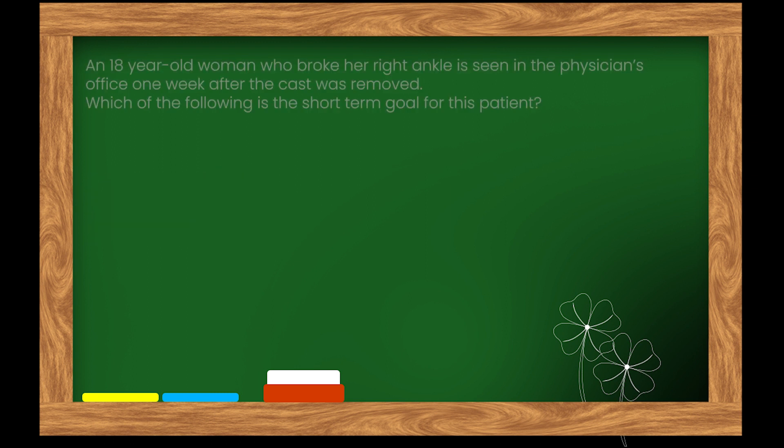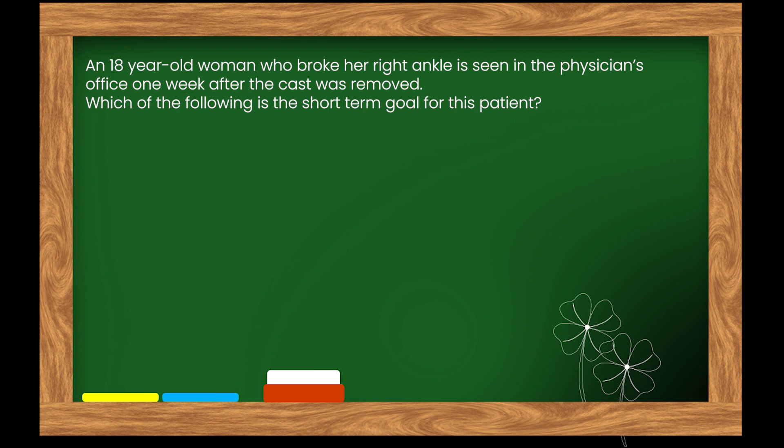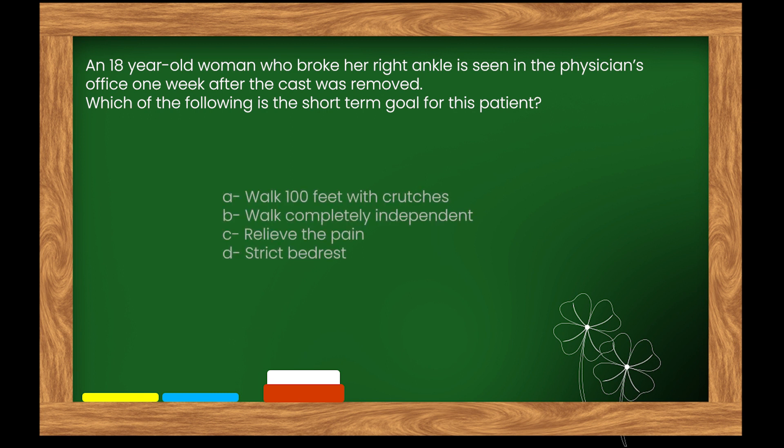Here is our next question. An 18-year-old woman who broke her right ankle is seen in the physician's office one week after the cast was removed. Which of the following is the short-term goal for this patient? Options: A. Walk 100 feet with crutches. B. Walk completely independent. C. Relieve the pain. D. Strict bed rest.